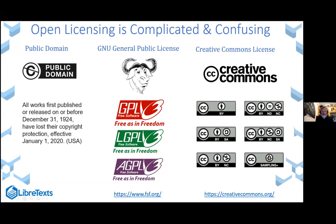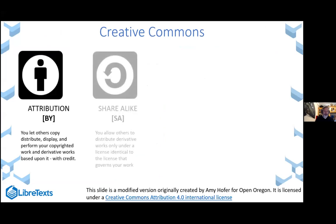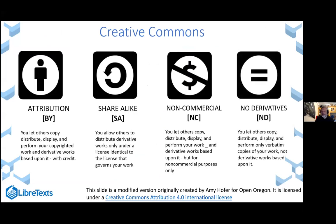Just because we have OER does not mean we own it. We have to follow through with the appropriate permissions and requirements that the specific license provides. The four key aspects of Creative Commons licensing to pay attention to are: Attribution (BY) — the requirement to attribute; Share-Alike (SA) — you can't change the license; Non-Commercial (NC) — you can't make a profit; and No Derivatives (ND) — you cannot edit the content.